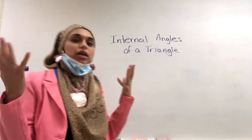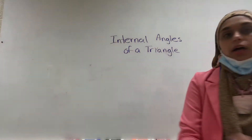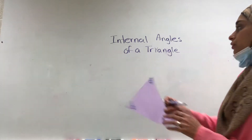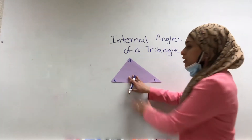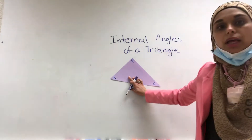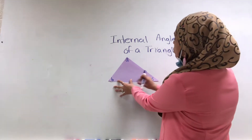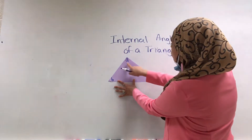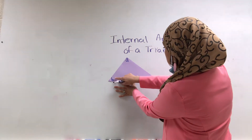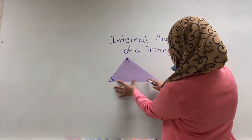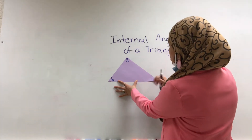So what do we mean by internal angles of a triangle? Here I have a triangle labeled angle A, angle B, and angle C. When we're talking about the internal angles of a triangle, we're talking about this angle plus this angle plus this angle. So these are the internal angles of a triangle.